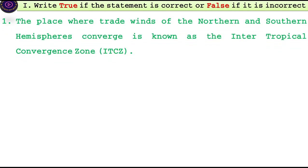The first question: the place where trade winds of the northern and southern hemispheres converge is known as the Intertropical Convergence Zone.